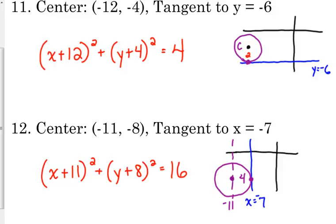So if you're tangent to a horizontal line, y equals, then you compare that line to the y-coordinate of your center to figure out the length of your radius. If you're tangent to a vertical line, x equals, then you compare it to your x-coordinate to find the length of your radius. It's pretty simple. Just need to show you a couple of examples there. So practice with the rest of the problem.